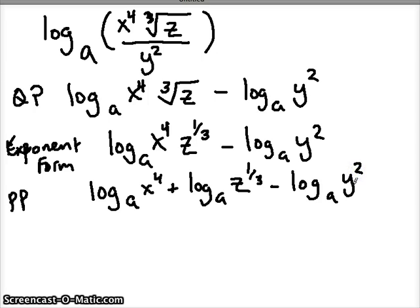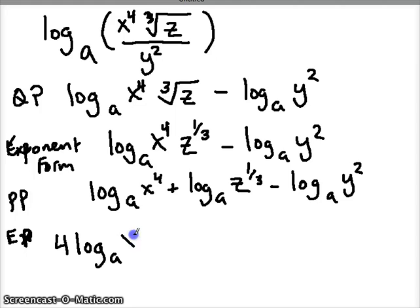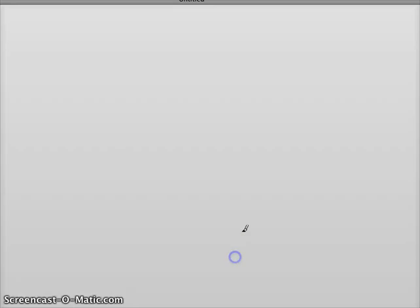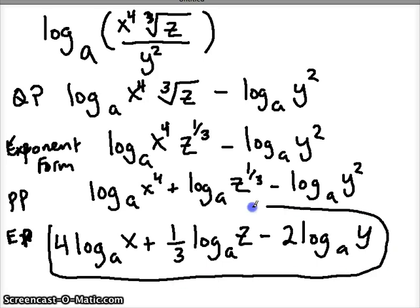Now finally we can do one more property — let's use our exponent property or power property. We take our exponent and put it on the front. So now we have 4 log base a of x, plus 1/3 log base a of z, and for the last one, take that power and put it on the front: minus 2 log base a of y. There's our final sum and difference of logs.